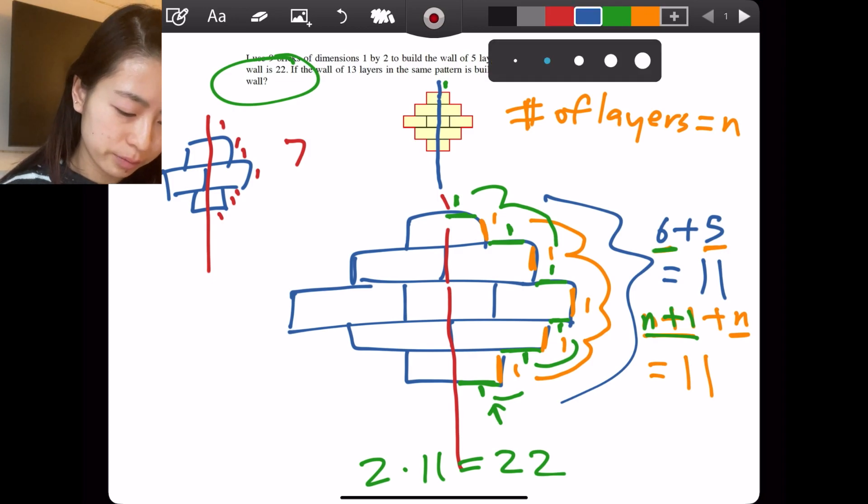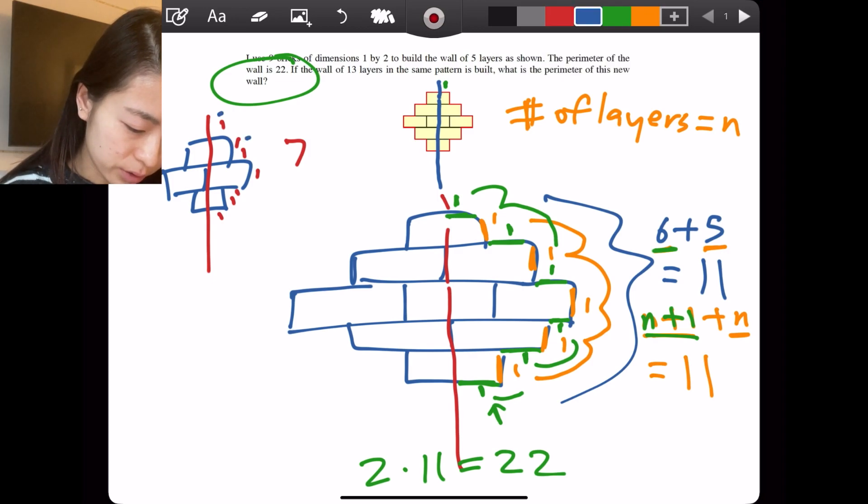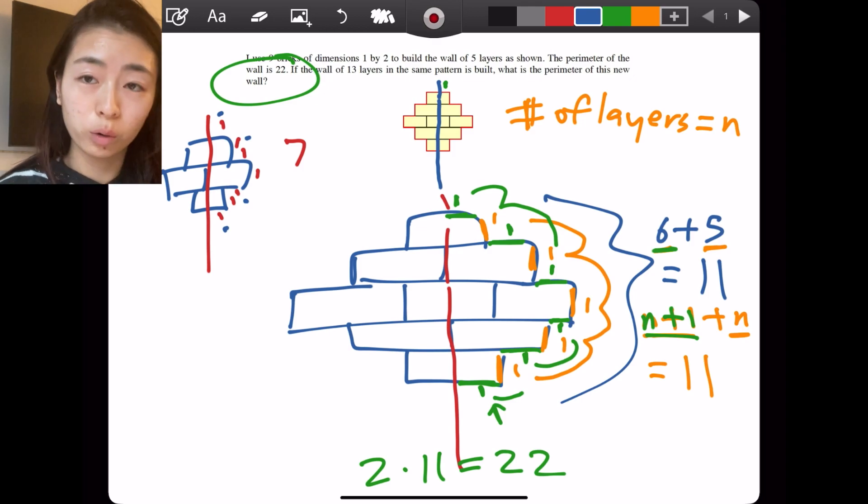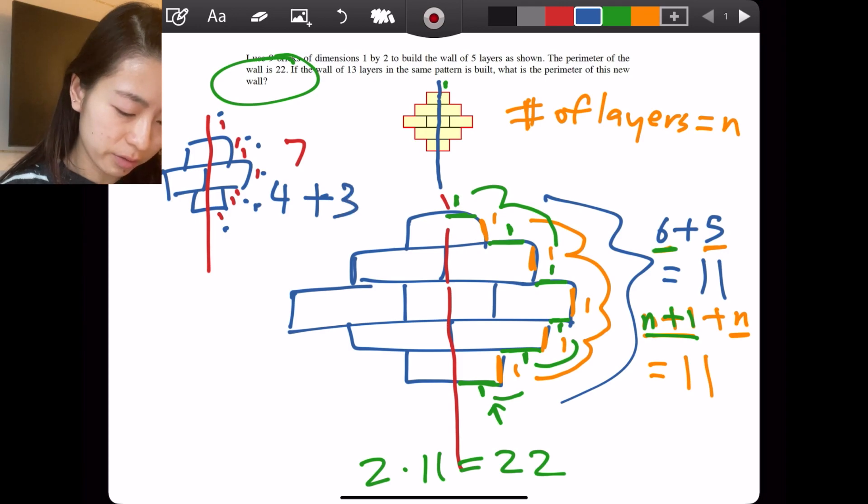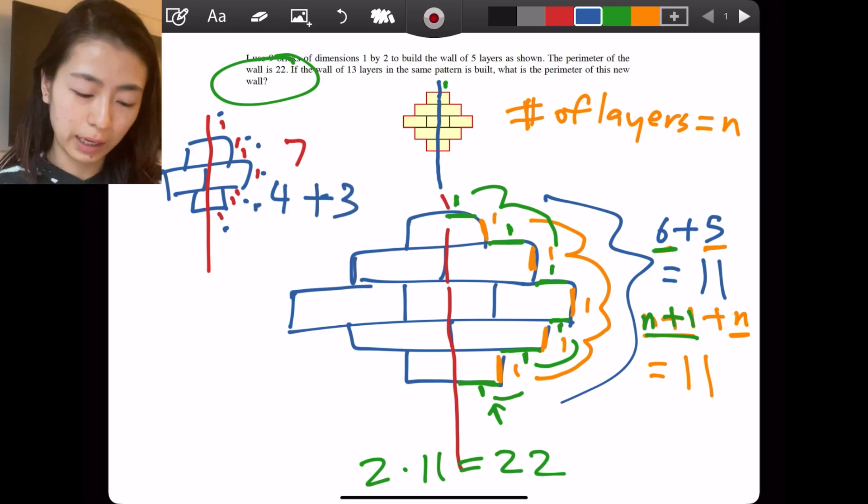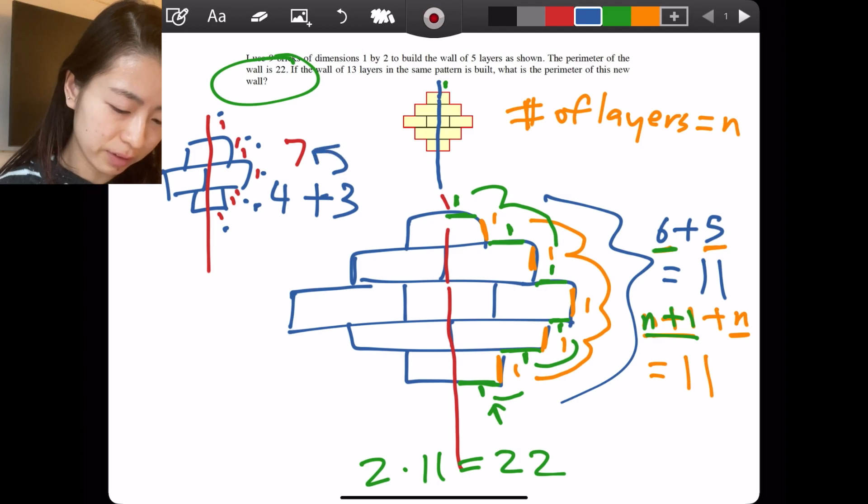That's also one, two, three, four of the horizontal parts plus one, two, three of the vertical lengths. That's how we get seven. And that means that this perimeter is going to be 14.